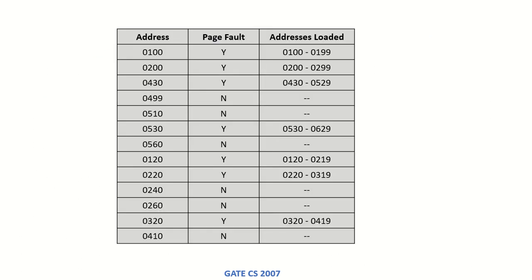The first address is 100, which will definitely be a page fault because we are assuming that the memory was initially empty. Since this is the address which caused the page fault, this address plus 99 more addresses will be loaded into the memory — so addresses from 0100 to 0199 are loaded.